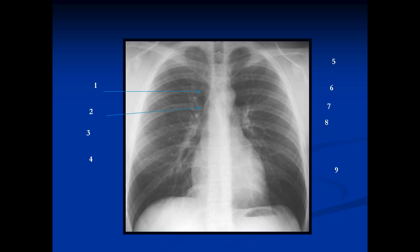The next structure we'll talk about is this little almond-shaped structure just above the right main stem bronchus — this is the azygous vein. The azygous vein is an alternate pathway for blood to flow from below the diaphragms up into the heart, and it actually empties into the superior vena cava.